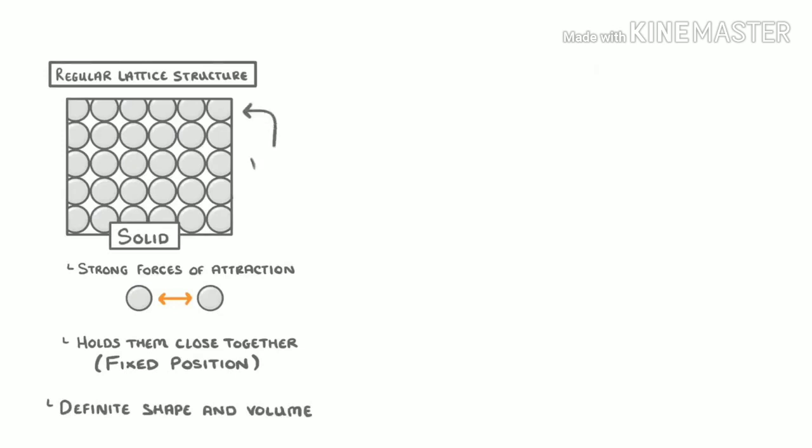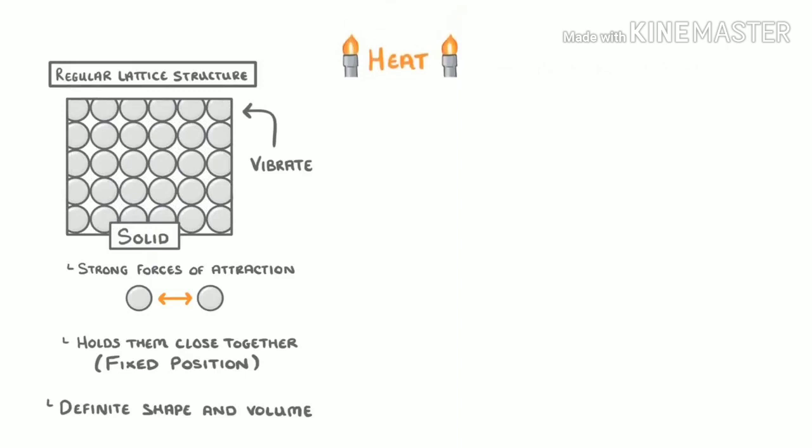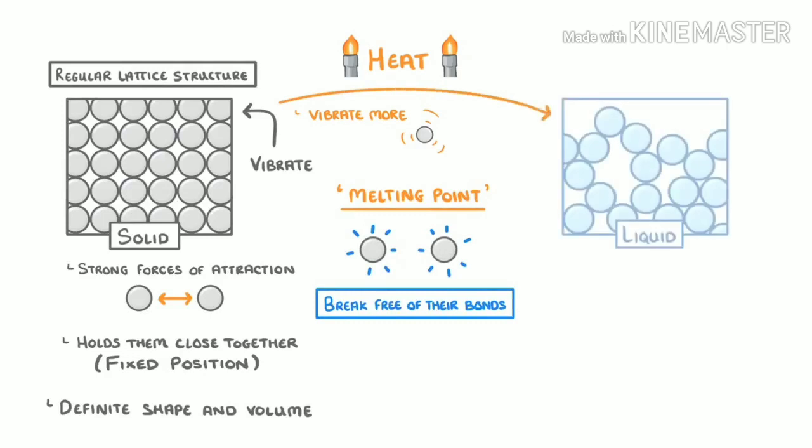The particles can vibrate around though, so you can imagine them constantly jostling against one another. Now, if we heat up a solid, its particles gain more energy and start to vibrate even more, which weakens the forces between them. And at a certain temperature, which we call the melting point, the particles will have enough energy to break free of their lines, and so the solid melts into a liquid.